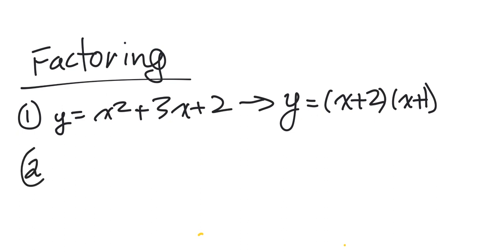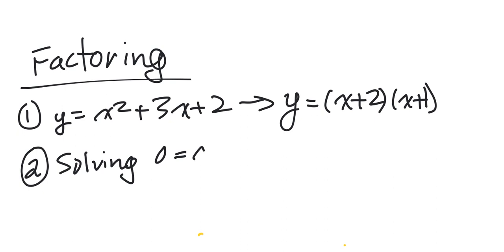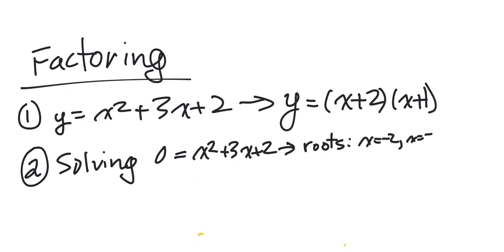Now, another use of factoring is this thing called solving. You could solve for some y value. In this case, let's say I wanted to know where the x-intercepts were for our original equation y equals x squared plus 3x plus 2. I could go through and find my values, and I'd know that my roots are x equals negative 2 and x equals negative 1. And you'll notice that there is a correlation between the intercept form and our roots.